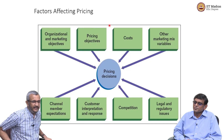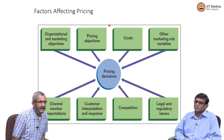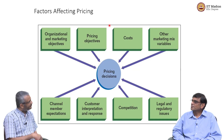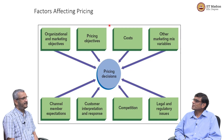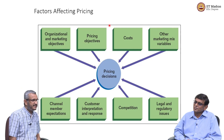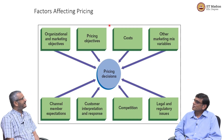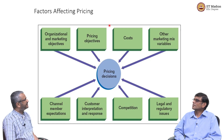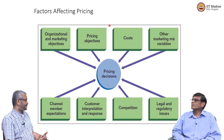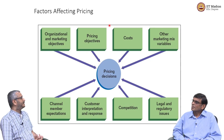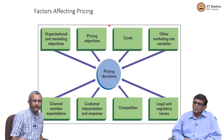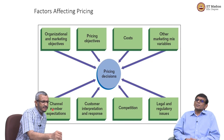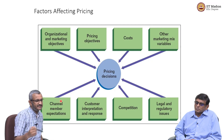Broadly, the factors that affect pricing are: one, organizational and marketing objectives of the firm — do you want sales maximization or higher profitability per unit? Two, the objectives of pricing — such as delivering higher perceived utility to the consumer, or fulfilling a social objective. In certain public sector units, especially in health or education, quality may be very high but pricing is kept low because there is a social objective. Cost is very important. Other marketing mix variables are also important — for example, the channel members' expectations, where channels like distributors play a key role.